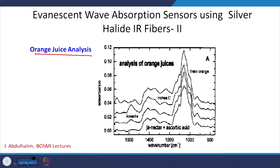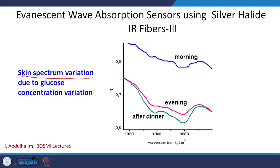Another example is orange juice analysis: fresh orange juice shows maximum absorbance, while nectar shows a decrease. Based on the absorbance, you can determine whether the juice is fresh. Similarly, researchers have monitored the absorption spectrum of skin at different times of day and found that changes in glucose concentration alter the transmission or reflection, measured as a function of wavenumber.